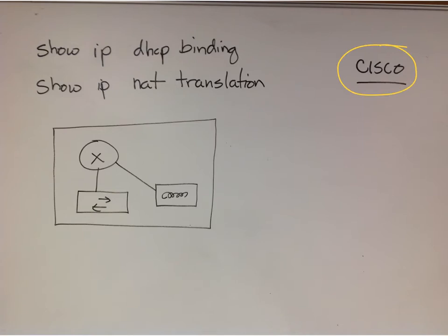Cisco was the password when they turned that into the router, and they showed the DHCP bindings. They showed the NAT translations.